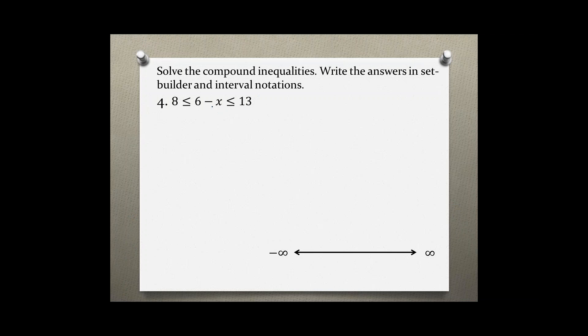Let's start trying to isolate x by subtracting 6 on each side of this compound inequality. So 2 is less than or equal to negative x, which is less than or equal to 7.